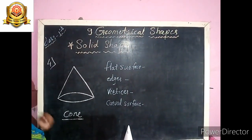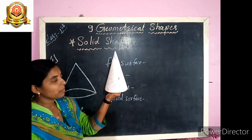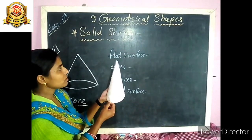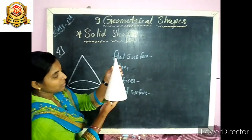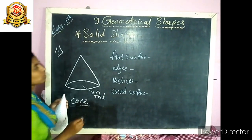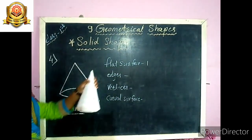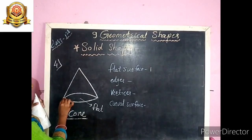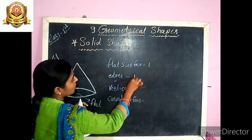Our 4th shape is cone. Look at this — this is a birthday cap and it looks like a cone. Cone has how many flat surfaces? Cone has only 1 flat surface. How many edges? Cone has 1 edge. The spelling of edge is E-D-G-E. Cone has 1 edge.